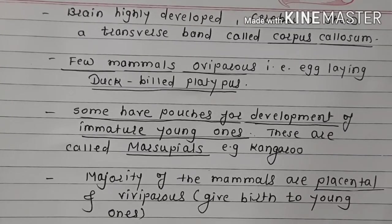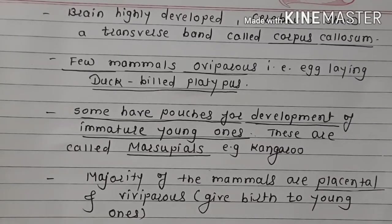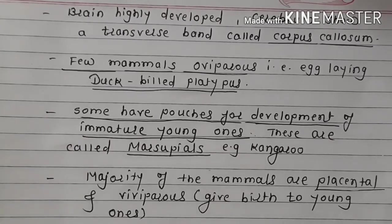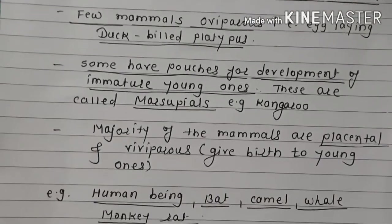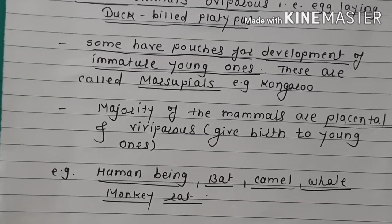Few mammals are oviparous — that is egg-laying — example, duck-billed platypus. Some have pouches for development of immature young ones — called marsupials — example, kangaroo. Majority of the mammals are placental and viviparous, giving birth to young ones — examples: human being, bat, camel, whale, monkey, rat, etc.